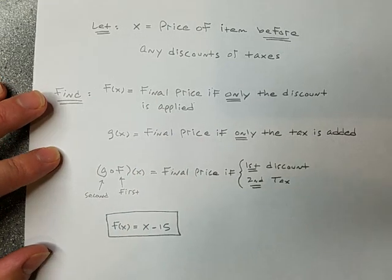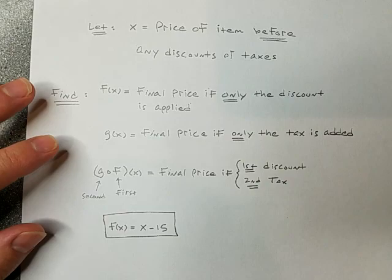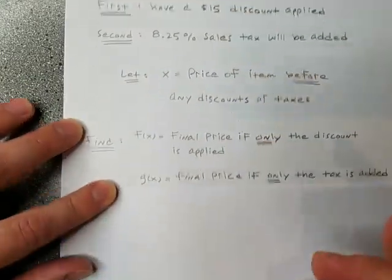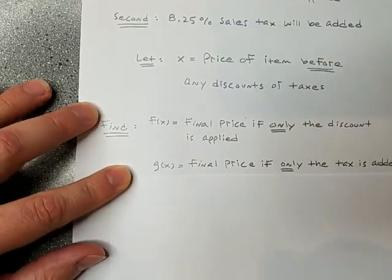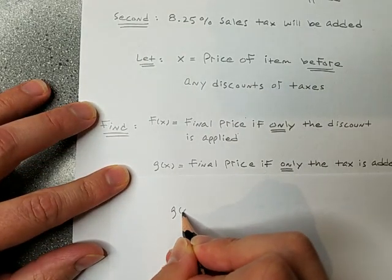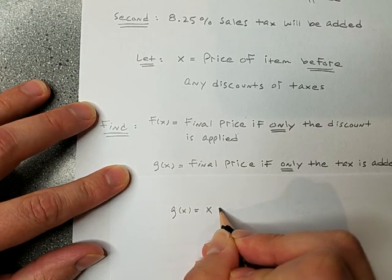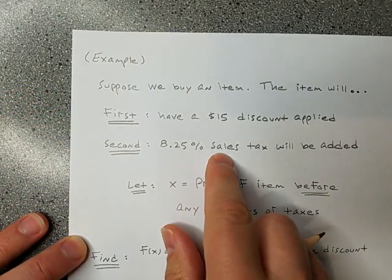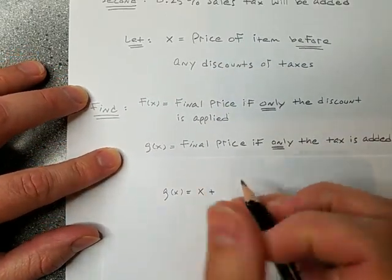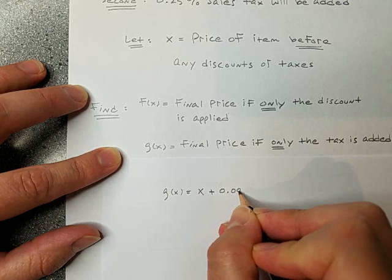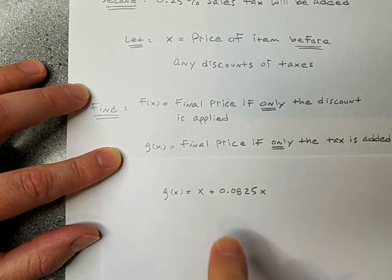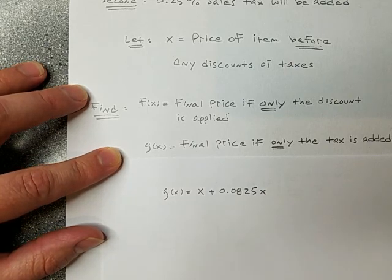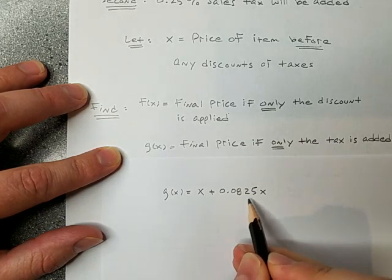What about g of x? What's g of x supposed to do? It gives me the final price if only the tax is added and nothing about the discount. Okay. Well, okay. Uh, sales tax 8.25% and x is the price of the item before any discounts or taxes. So let's say g of x would be, you take the price plus, do you know how to, how to calculate percentage discounts and taxes and so on? Do you know how to do that? Well, we would take the original price plus 8.25% percent of the price. That's the price plus 8.25% of the price. That's adding the tax in at 8.25%.